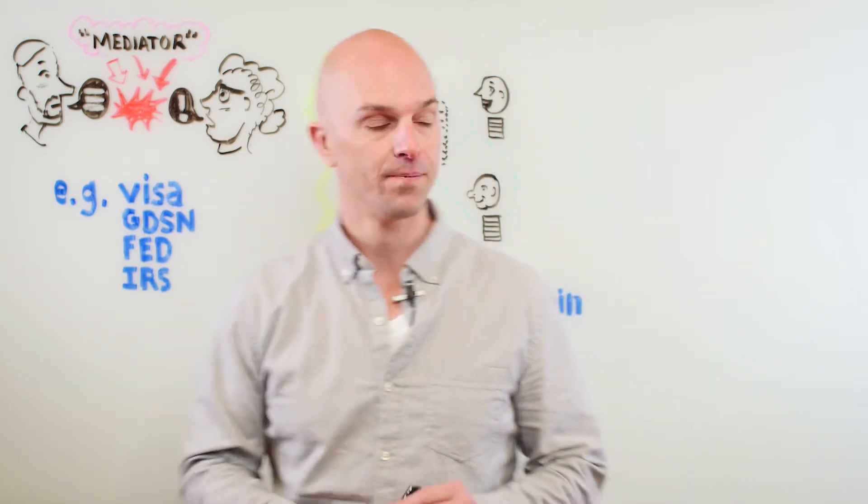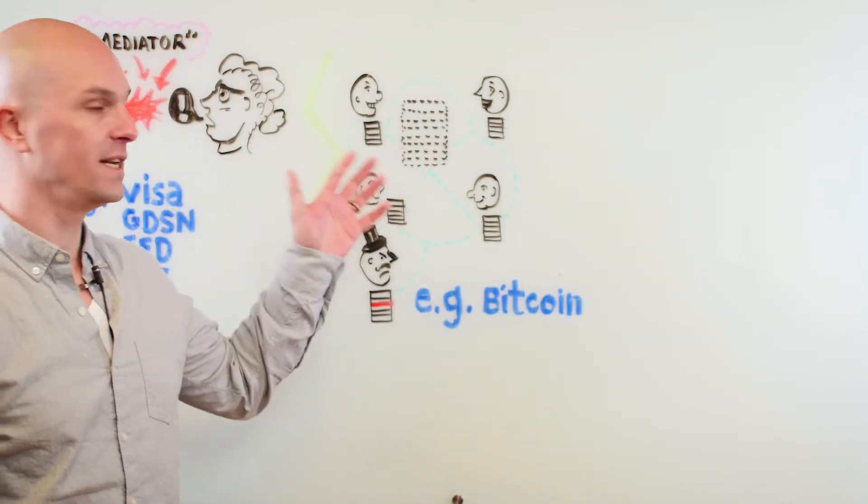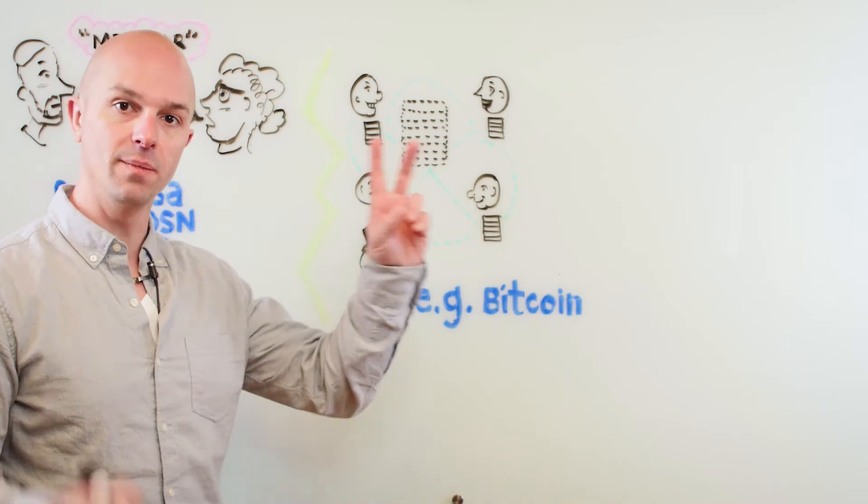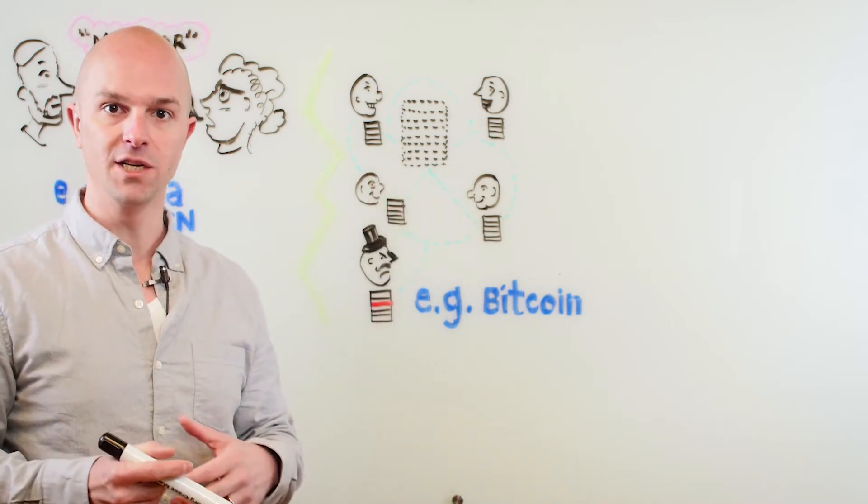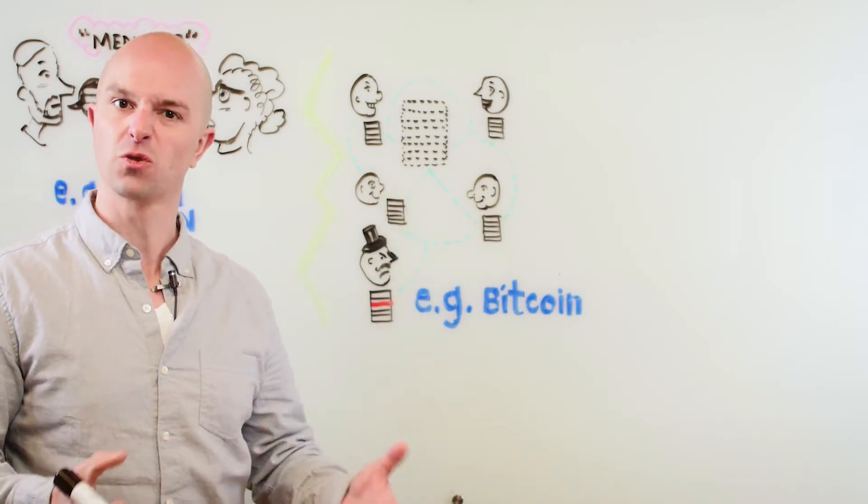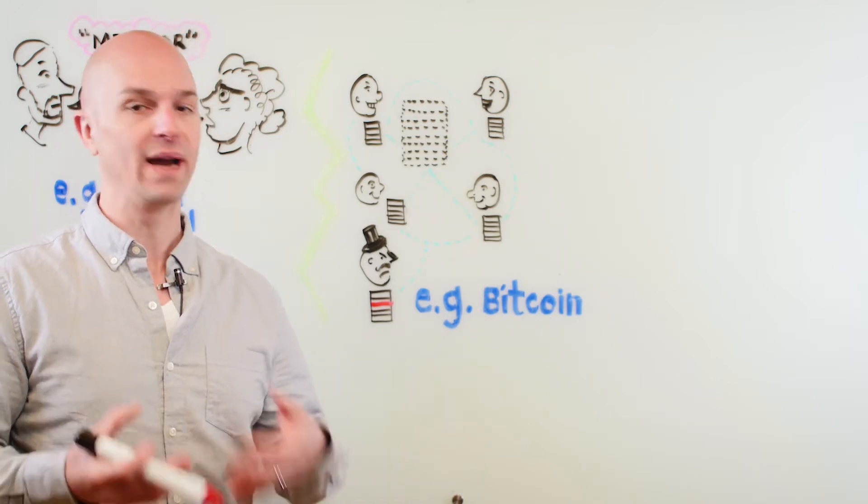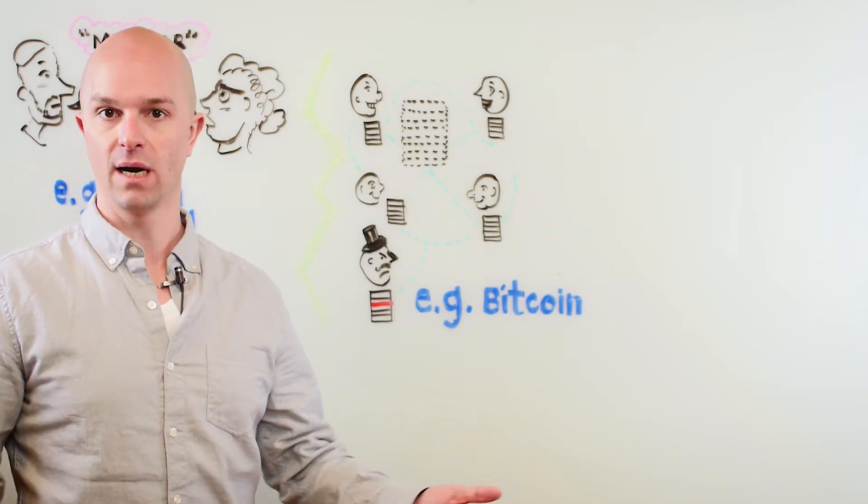Now with blockchain in particular, what blockchain does is it provides fundamentally what's called the distributed ledger. A distributed ledger means that the ledger doesn't exist in one place, it's not controlled by one entity. It's controlled effectively by everybody who's using it in concert with each other.